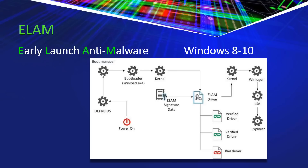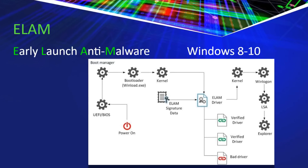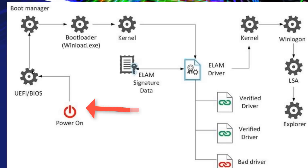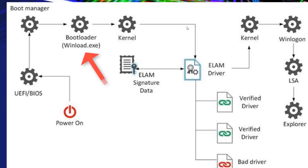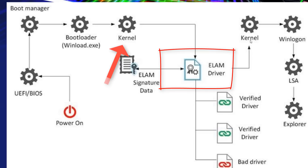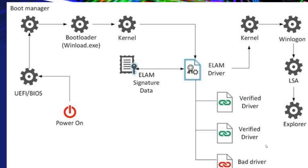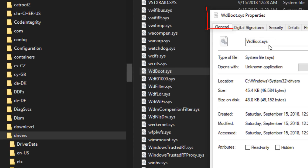I'll throw in a quick review of ELAM — Early Launch Anti-Malware — which was introduced with Secure Boot in Windows 8 and is still available in Windows 10. Here's how it works: power on, UEFI firmware launches your boot manager, loads your winloader and your kernel, your kernel then launches your Early Launch Anti-Malware driver, which based on a signature database begins to check all the components of the operating system — all the drivers — and verifies that they are correct. The actual ELAM driver file is called WdBoot.sys.